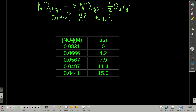We have this chemical reaction — decomposition of nitrogen dioxide into nitrogen monoxide and oxygen — and we want to find three things: the order of the reaction, the rate constant, and the half-life. We're given a data set of the concentration of nitrogen dioxide as a function of time. The way to do this is first find the order; once we know the order, we know the integrated rate law and the form of the half-life equation.